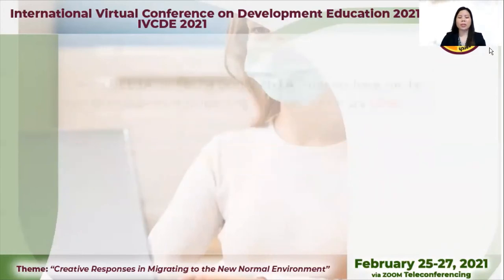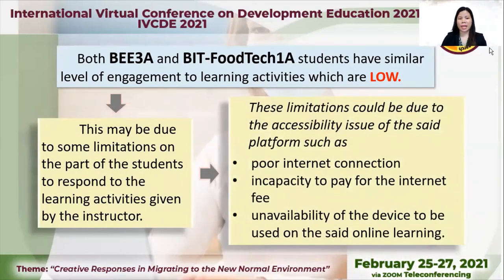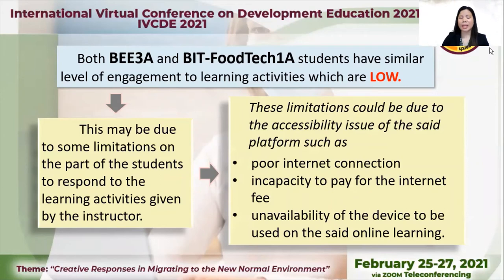Based on the results of this study, I concluded that both the Bachelor of Elementary Education 3A and the Bachelor of Industrial Technology Food Tech 1A students have a similar level of engagement to learning activities, which are low. This may be due to some limitations on the part of the students to respond to the learning activities given by the instructor. These limitations could be due to accessibility issues such as poor internet connection, incapacity to pay for the internet fee, and unavailability of the device to be used for online learning.